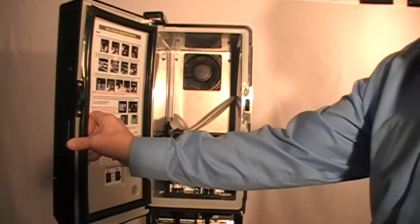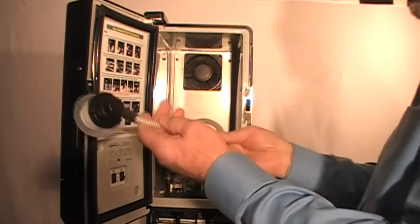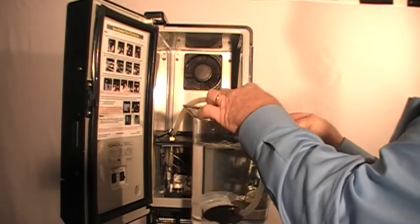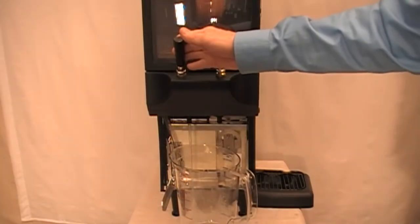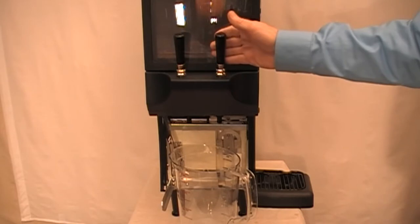After preparing the sanitizer, submerge the BIB adapter into the container and place inside cabinet and close the door. Make sure both red shipping plugs in the nozzles have been removed. Now dispense a quarter of a gallon of sanitizer from each dispense tap and then allow the sanitizer to soak for 20 minutes in system.